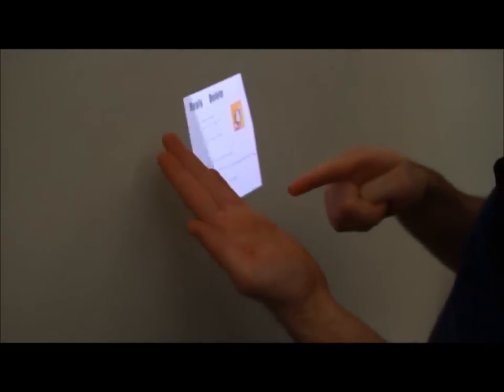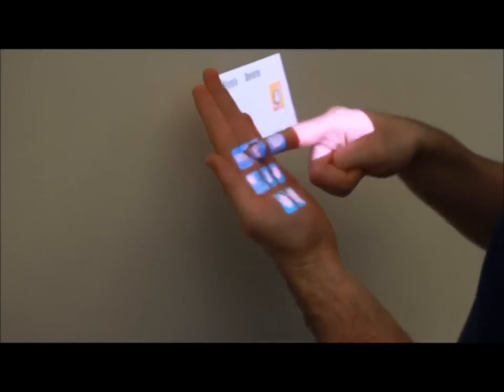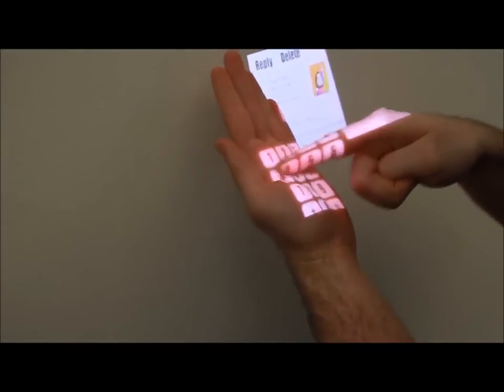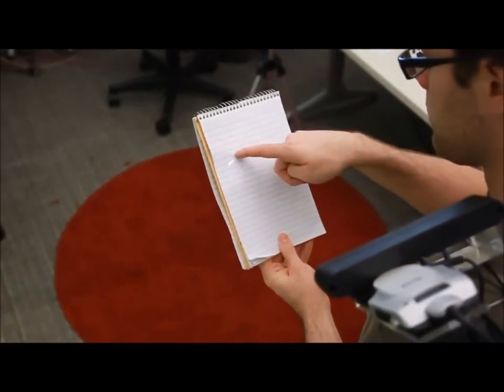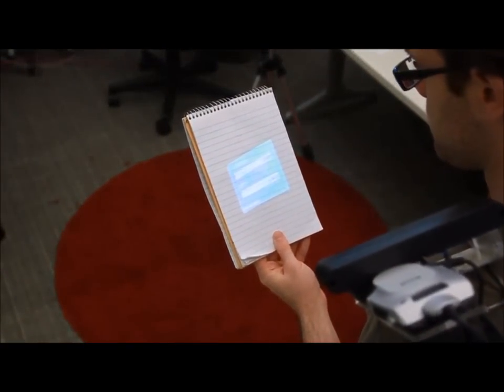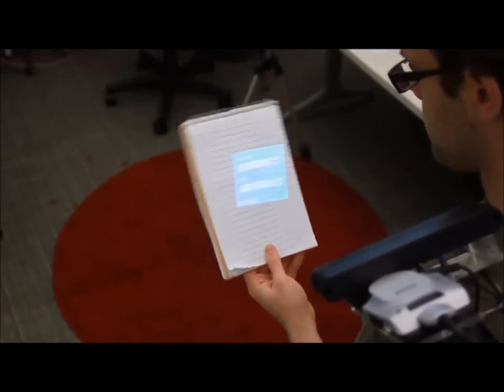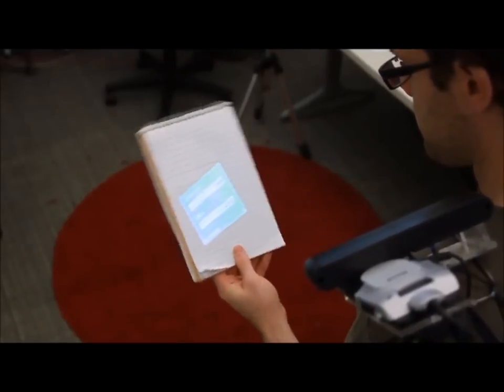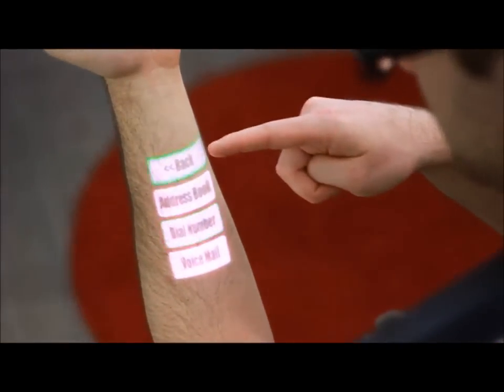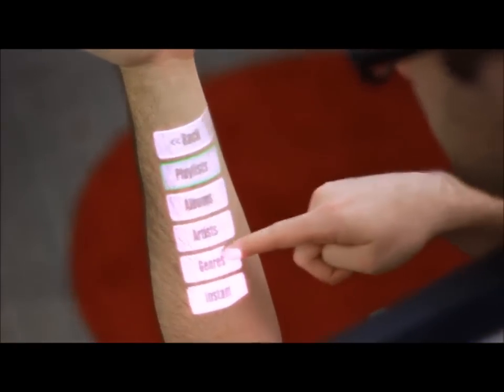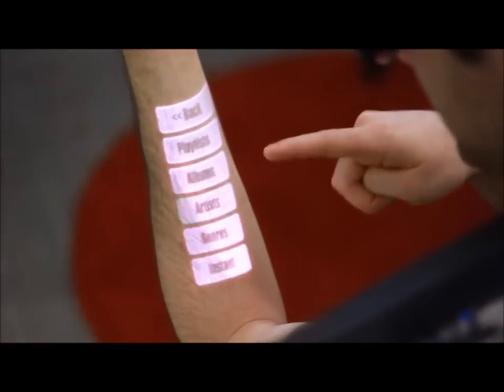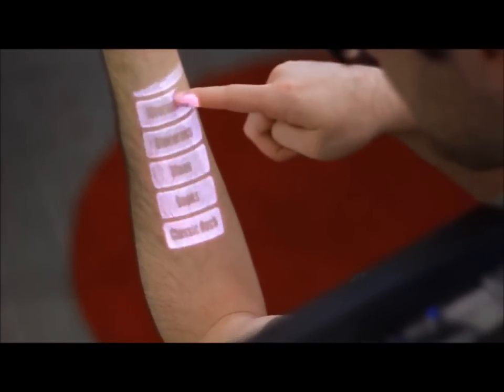Here, a user clicks their palm to summon an application launcher, selects the phone app, and dials a number. We explored several methods for defining the position and size of interfaces. In some cases, it is easiest and often best to let users define where applications should appear. However, in other cases, it is possible for OmniTouch to make a reasonable approximation automatically.